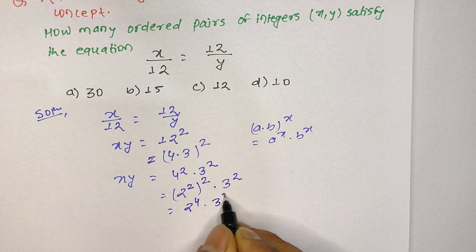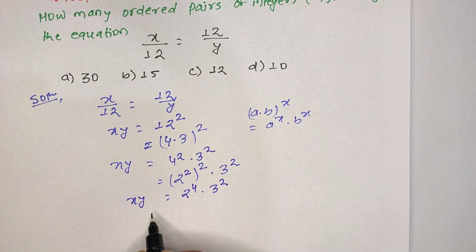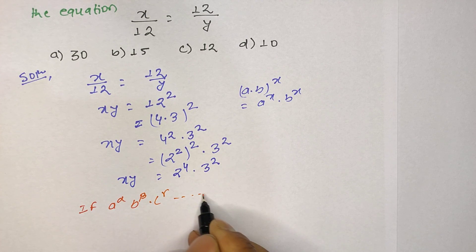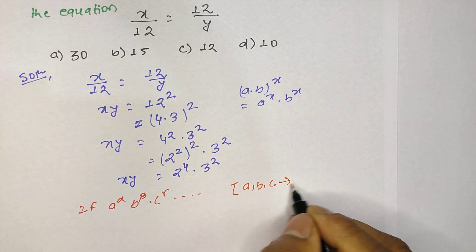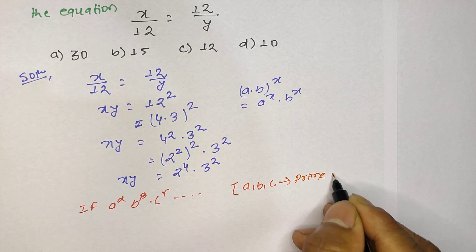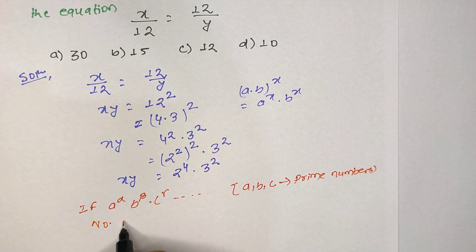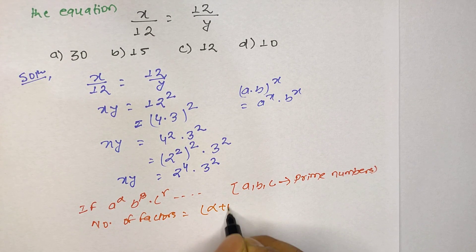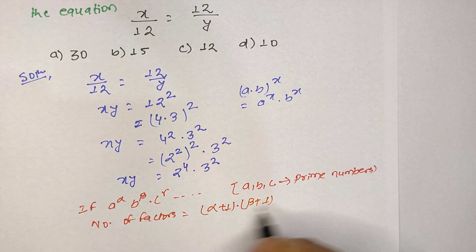Again we can apply this concept, so 2 power 4 times 3 power 2. In the left side we have x times y. So if a power alpha, b power beta, c power gamma, dot dot dot, where a, b, c are prime numbers, then number of factors equals alpha plus 1 times beta plus 1 times gamma plus 1, and it goes on.